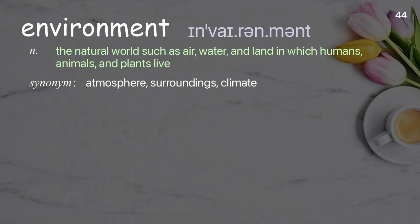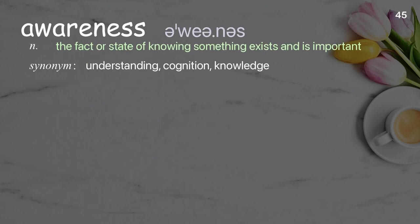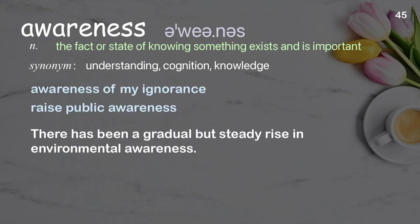Environment: the natural world such as air, water, and land in which humans, animals, and plants live. Examples: environment affairs, chaotic environment. Every human is responsible for taking care of the earth's environment. Awareness: the fact or state of knowing something exists and is important. Examples: awareness of my ignorance, raise public awareness. There has been a gradual but steady rise in environmental awareness.